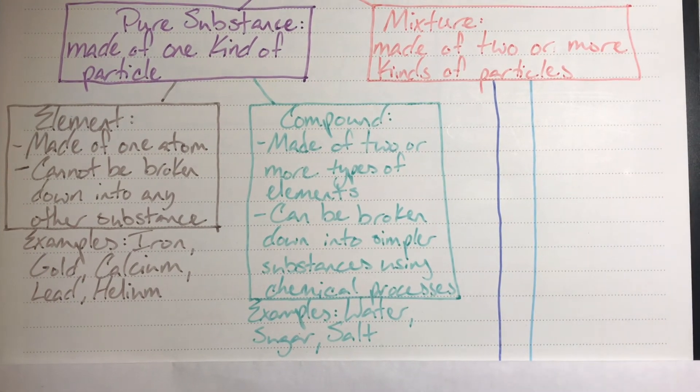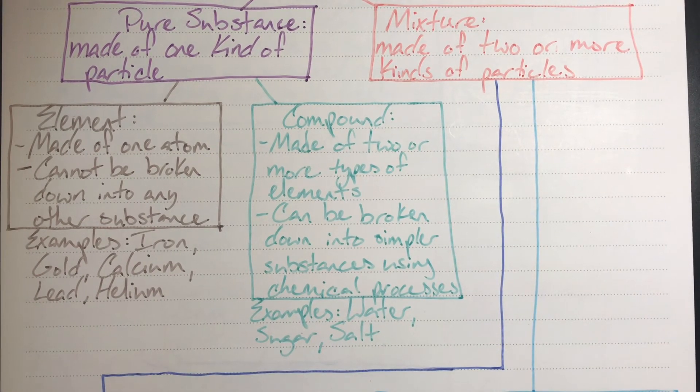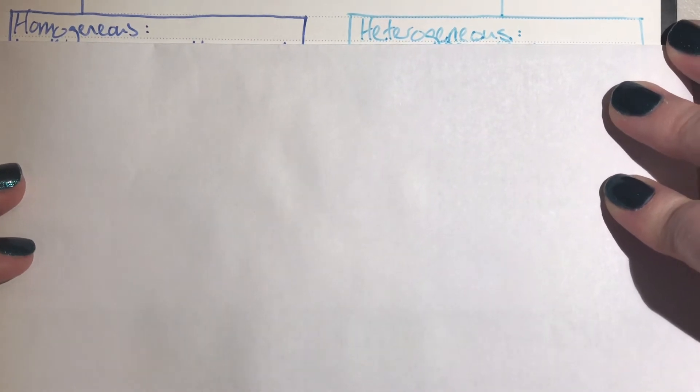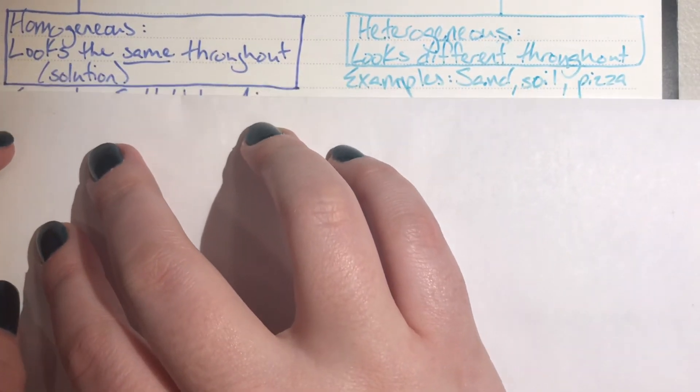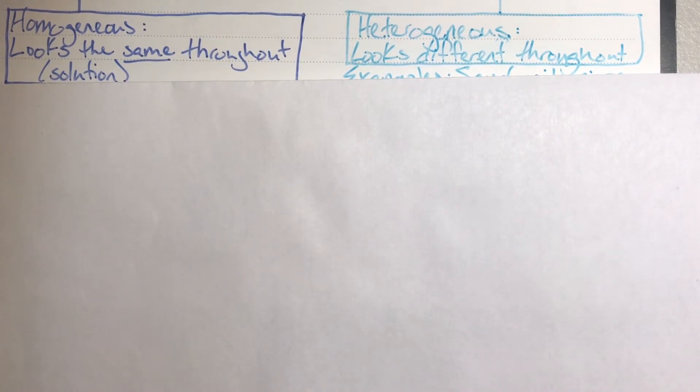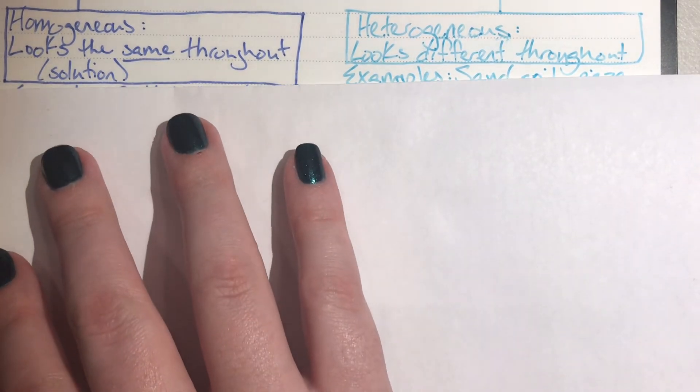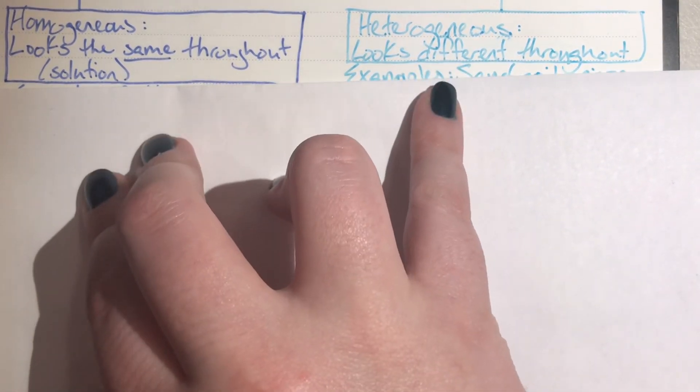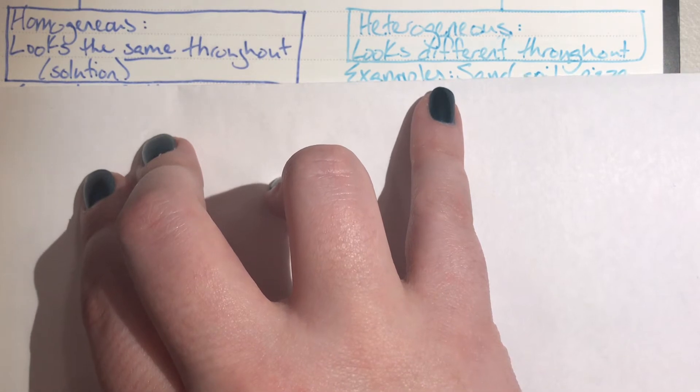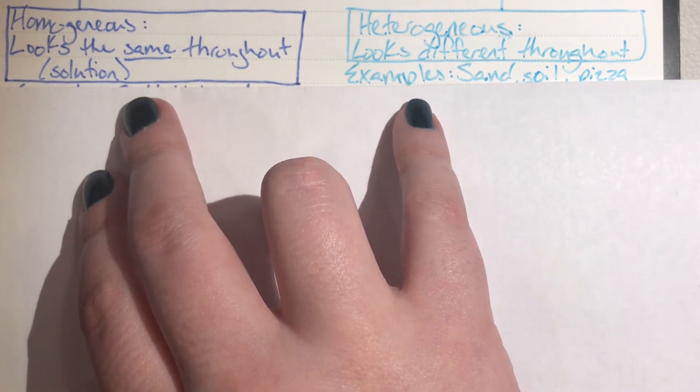Now we can explore mixtures. There are multiple types of mixtures. The two main types are homogeneous mixtures or heterogeneous. You've probably heard the word homogeneous in reference to milk, so homogenized milk basically means that milk is going to look the same throughout. Homo means same. The opposite is heterogeneous, which means it looks different throughout. Hetero means different.